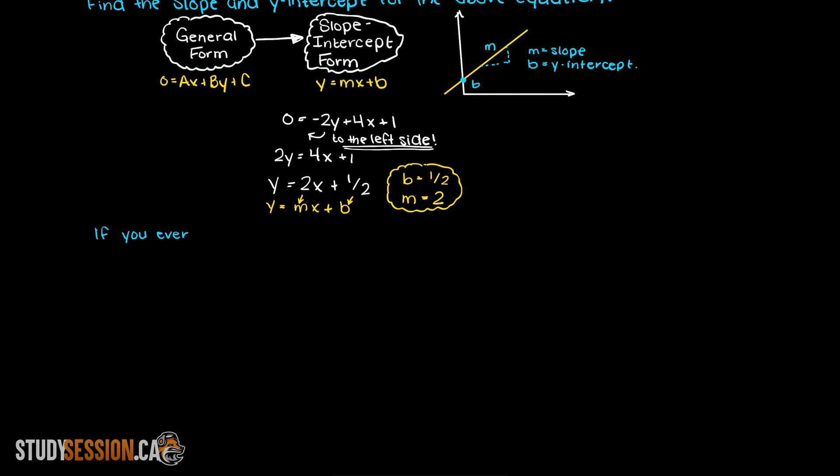I just want to quickly add that if you're ever trying to identify the x-intercept, this can be done by setting the y-value to zero as this will be the point when we cross the x-axis.